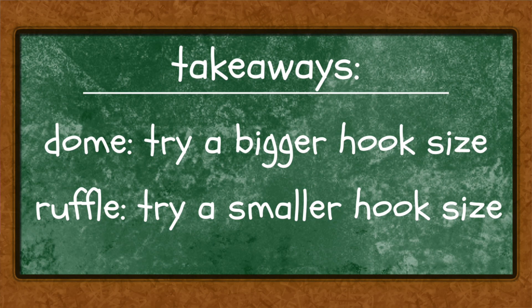The other takeaway was how to troubleshoot if your circles weren't lying flat — if they were ruffling or making a dome. If your project is ruffling you need to try a smaller hook size, and if your circle is forming a dome you need to use a bigger hook size. But what if you want to use the wrong number of stitches? Can it be done and if so how? That is what I'm going to cover in today's video.